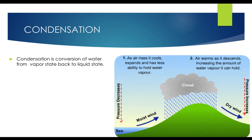Condensation — when water vapor goes up, it cools down and falls back down again. Condensation is the conversion of water from vapor state back to liquid state. What happens during this process is that moist wind, which is very heavy over the sea, creates a pressure difference — high pressure and low pressure — due to which heavy clouds are pushed towards the land, and then they start raining.